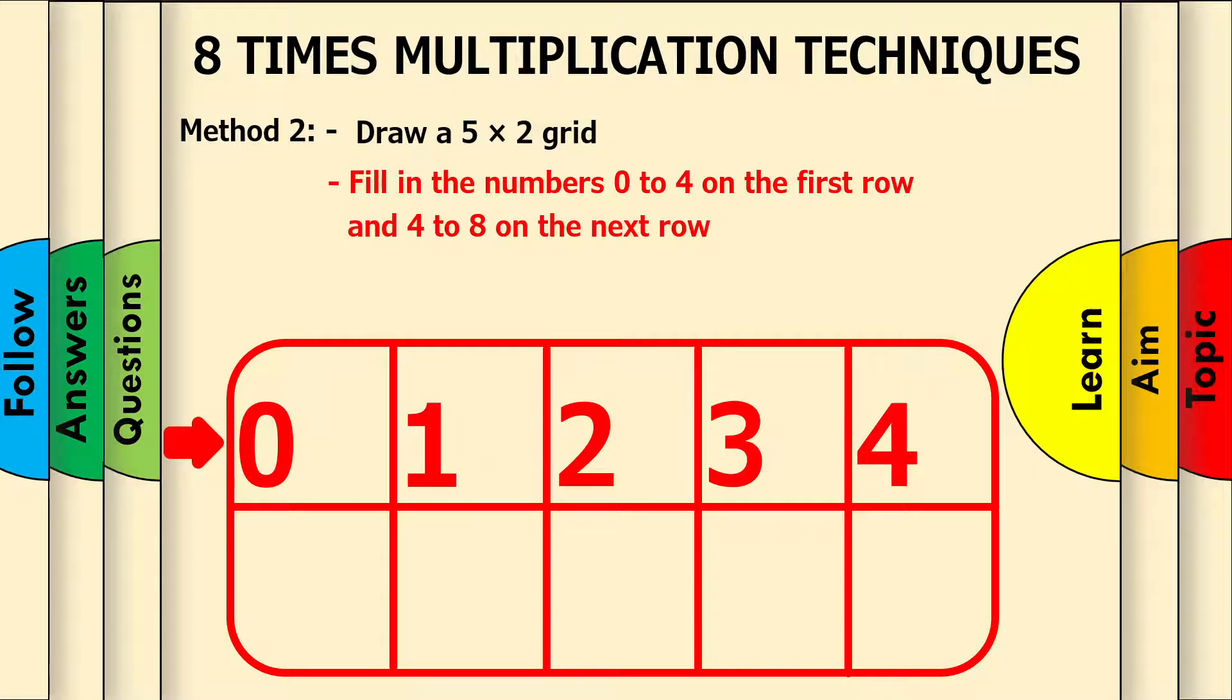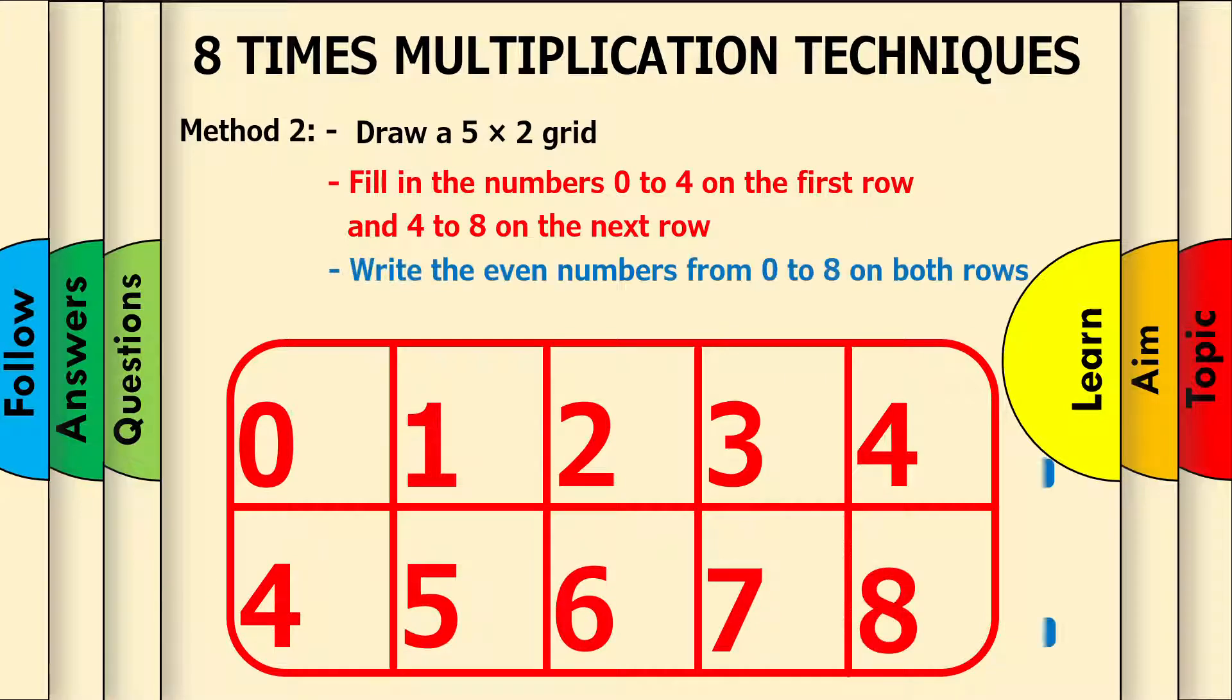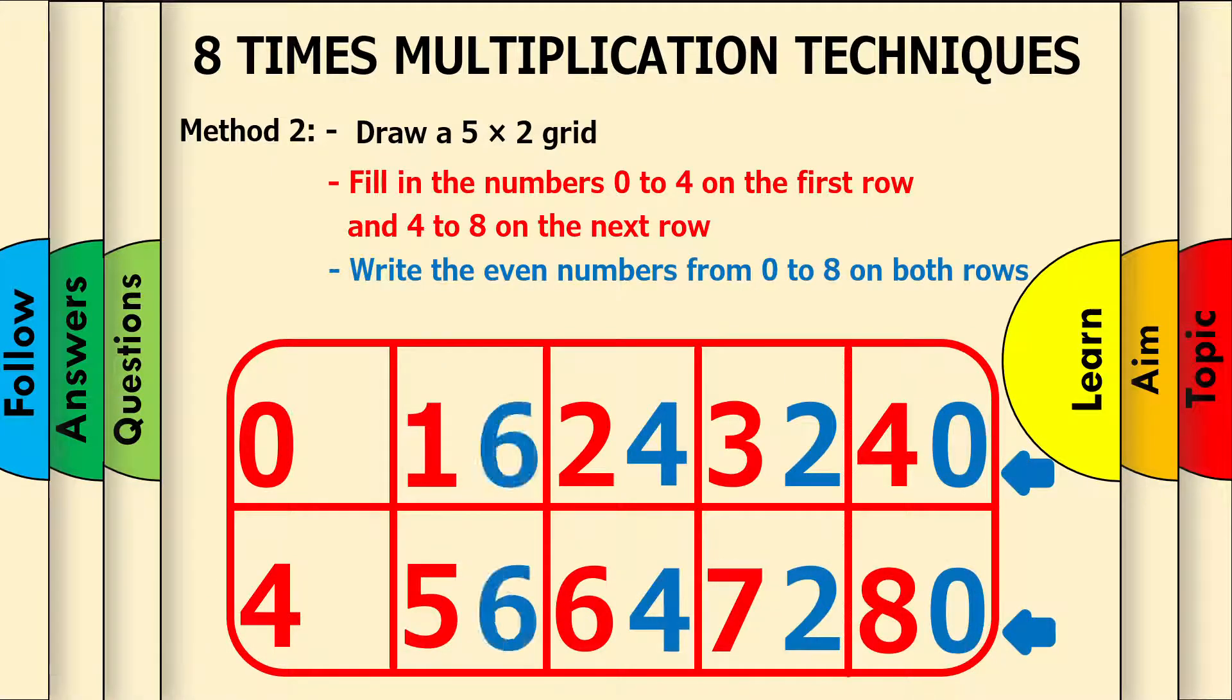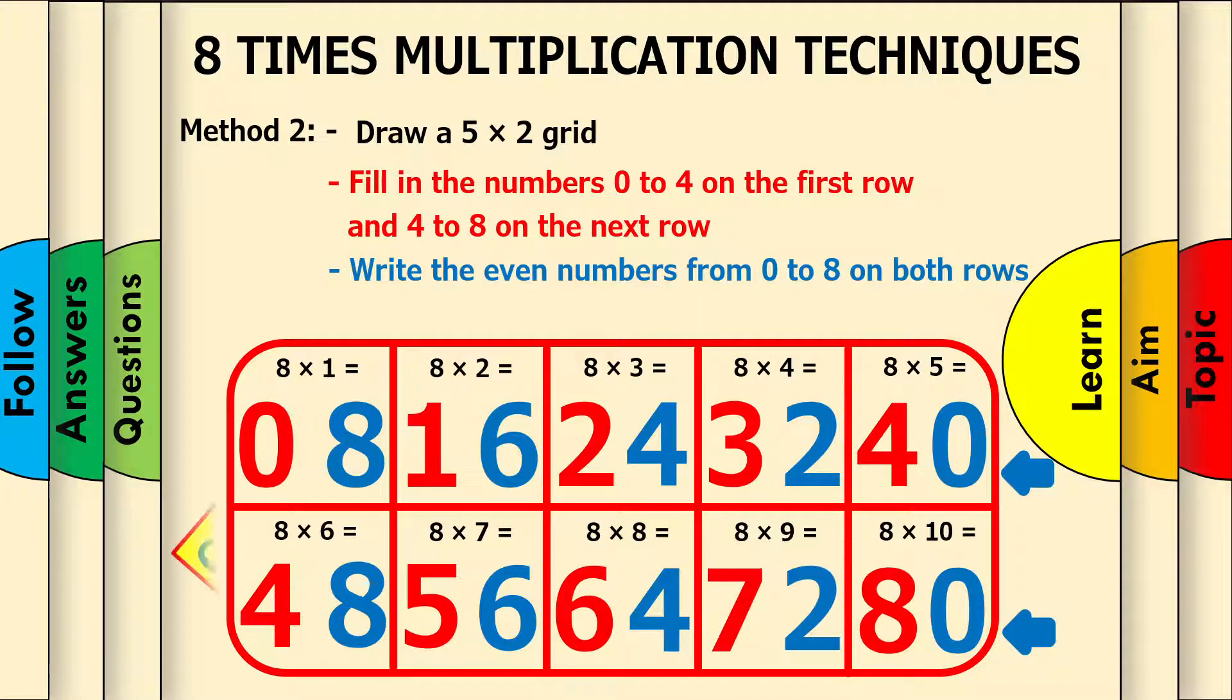Then carry on by filling the numbers 4 to 8 on the next row. So, 4, 5, 6, 7, and 8. Now write the even numbers from 0 to 8 on both rows to complete the 8x table. Wonder how? Let's press the magic button. This is called the grid technique.